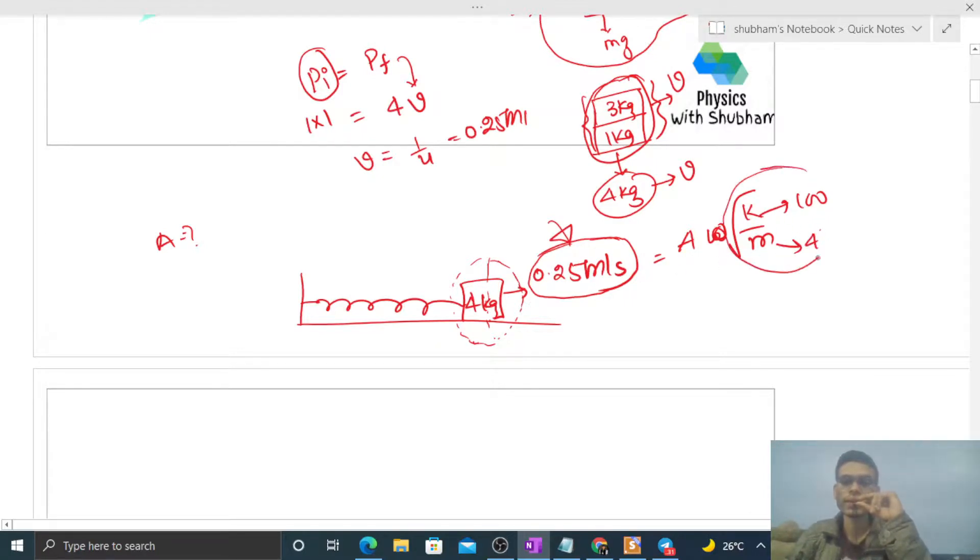So 5 times a, that is your 0.25. So amplitude for this SHM will be 0.25 divided by 5, that is 0.05 meter, or you can say 5 centimeter.